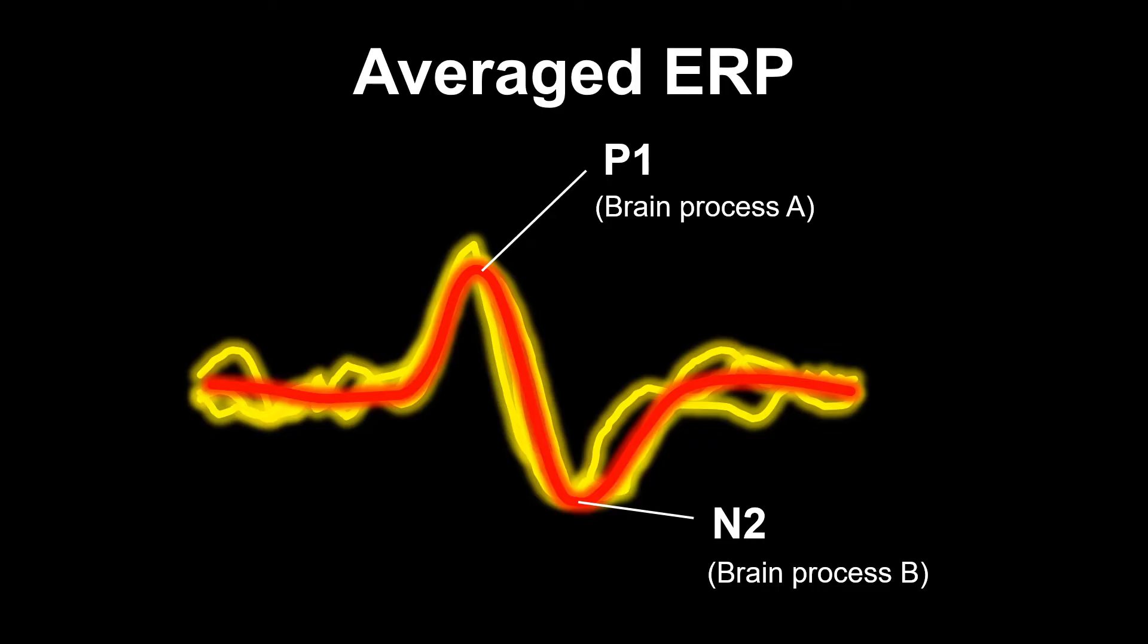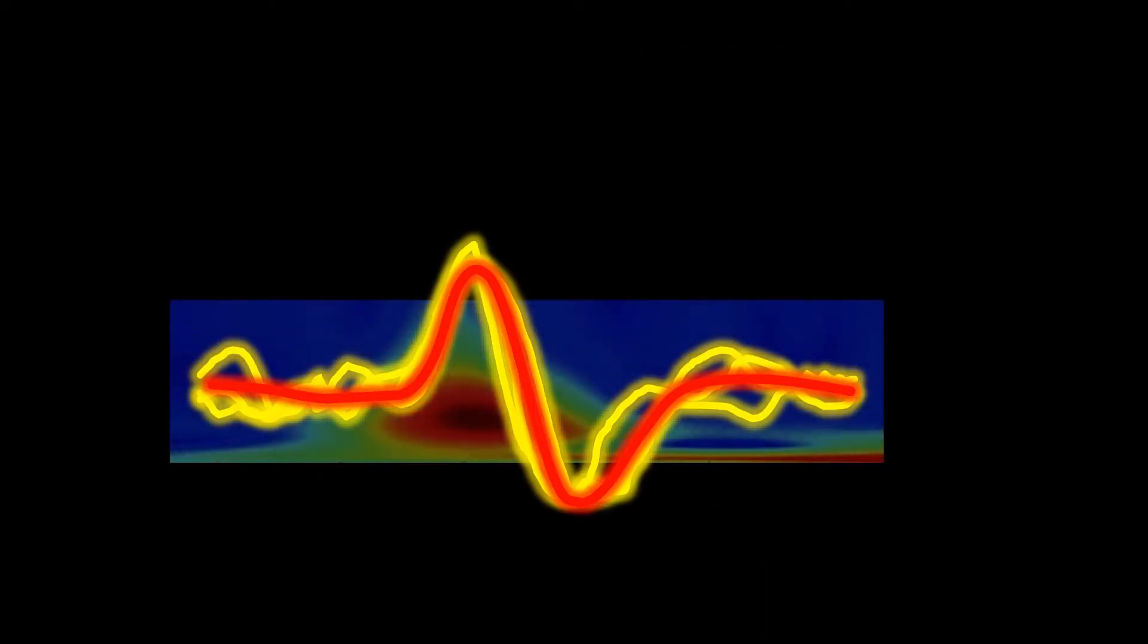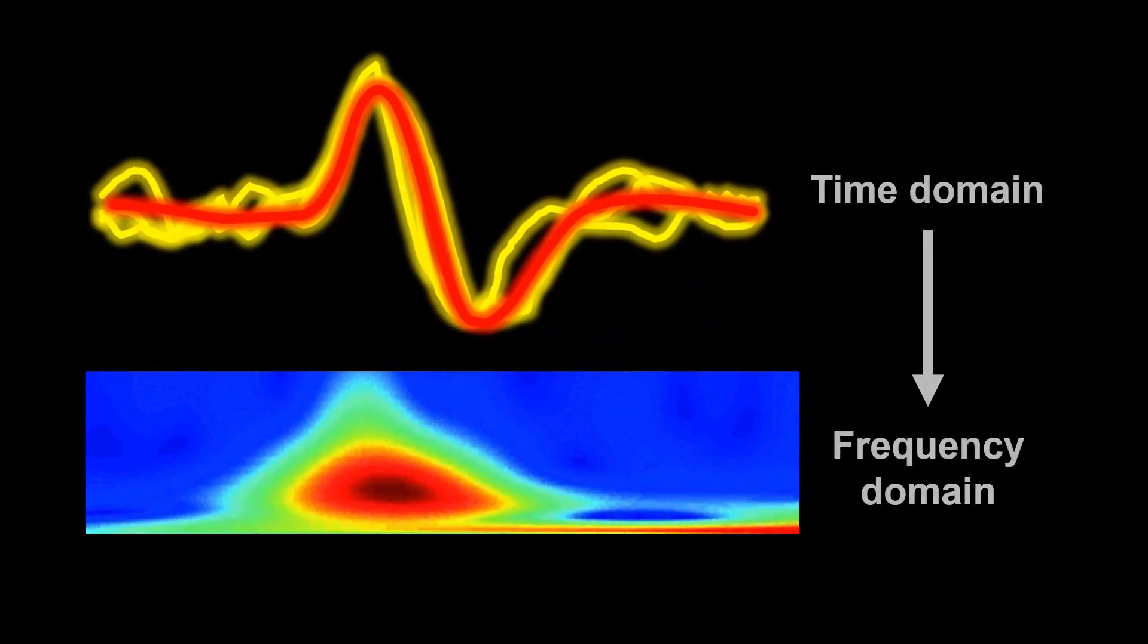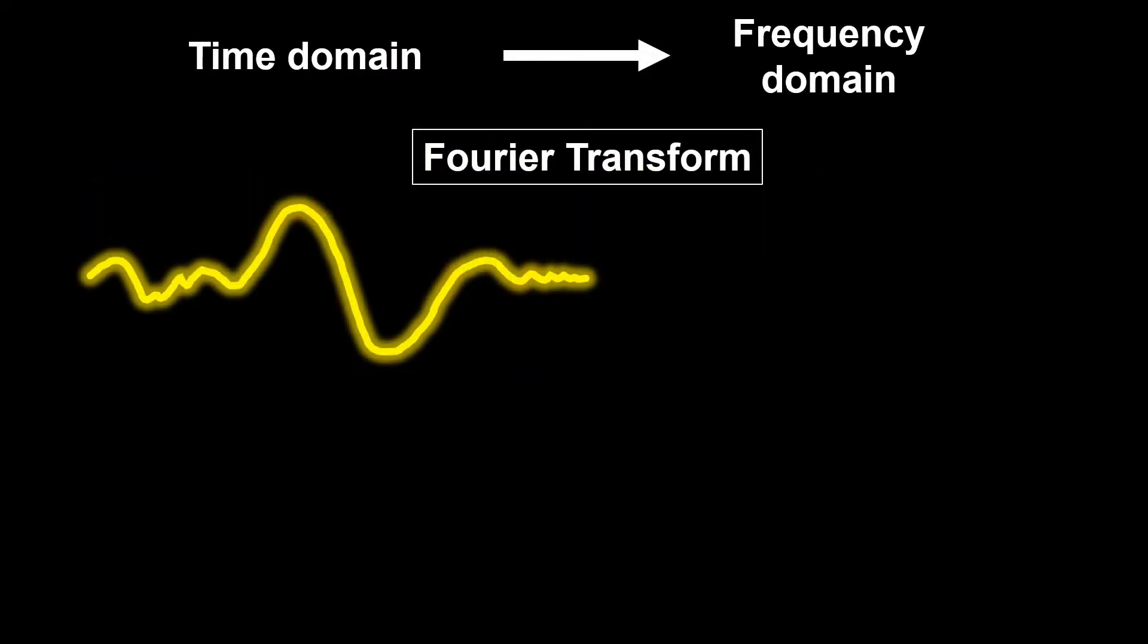Event-related oscillations are similar, but there is one additional step. First, we translate the brain signal to the so-called frequency domain. This means that we look at how fast the waves at a specific point in time are. Such a change from the so-called time domain to the frequency domain can be done by using a Fourier transform.